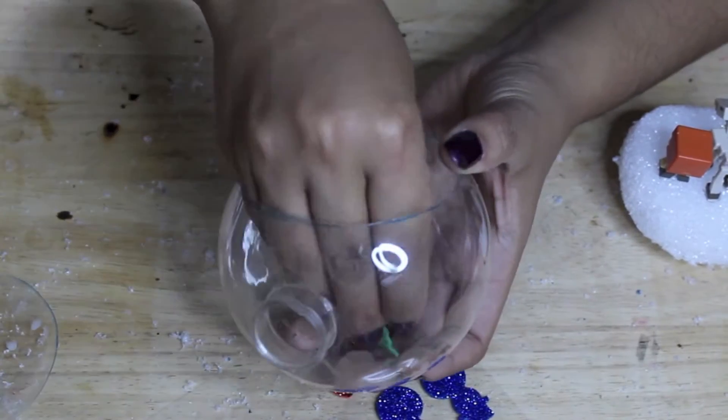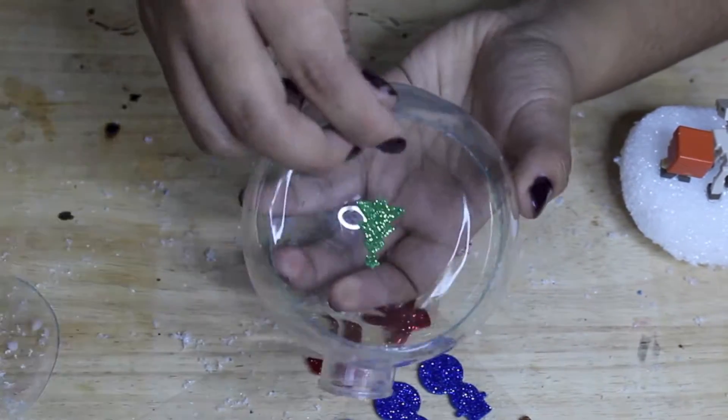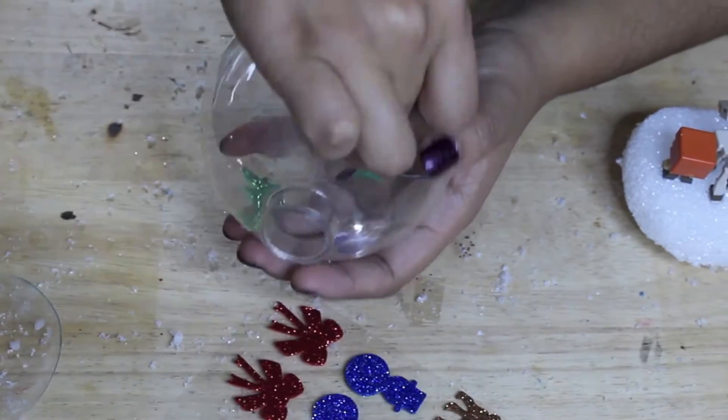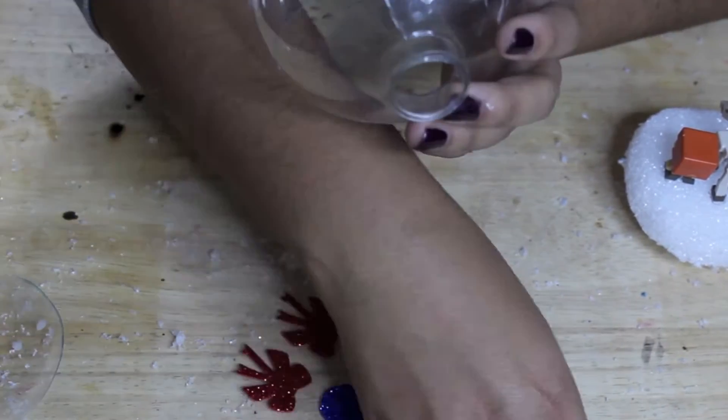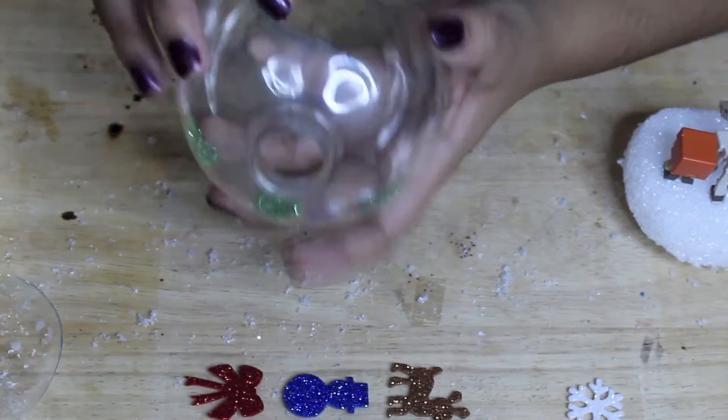To add more decoration onto the Minecraft ornament, you want to use your holiday glitter stickers and apply it inside of the ornament ball. This will create more decoration and design, and will put everything into place.